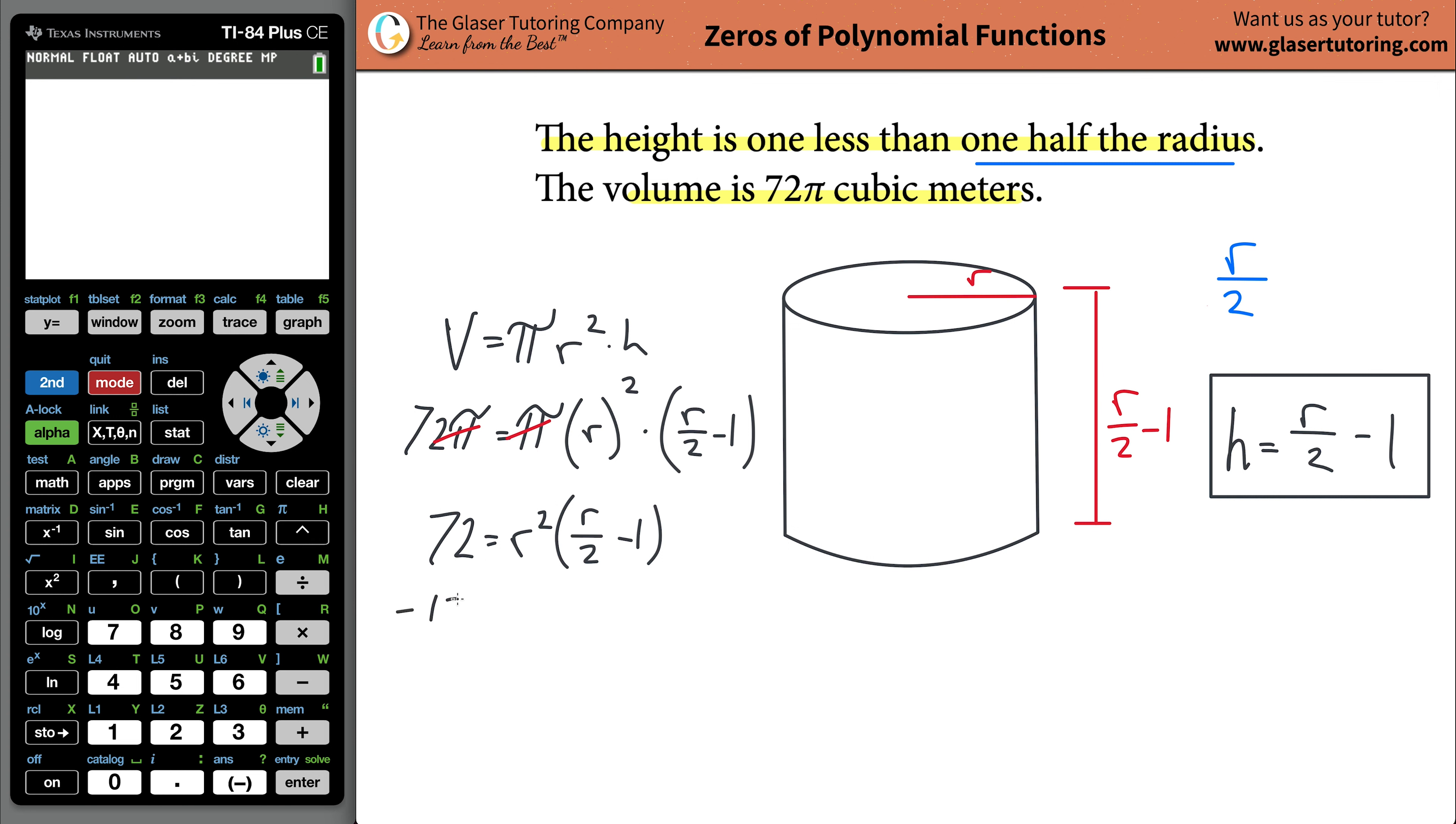I highly doubt that you're not going to have a calculator here to solve this problem. But if you don't, what you would do is factor this, basically, not factor it. What you would want to do is set this equal to zero. That's what I'm going to do anyway right now. So zero is going to be equal to R squared times R over two minus one minus 72. And then what you'd have to do is distribute this. You're going to get like a cubic function.